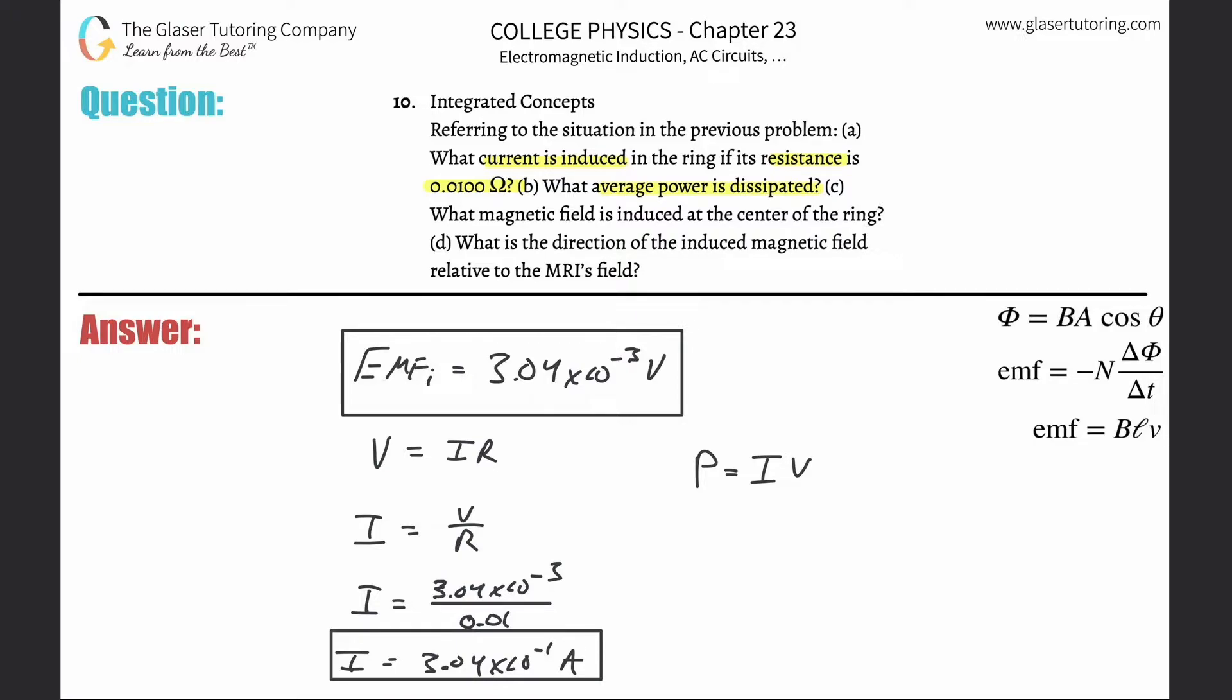So the power is equal to the current here of 3.04 times 10 to the minus 1 multiplied then by that EMF of 3.04 times 10 to the minus 3. Let's see what we get.